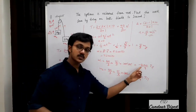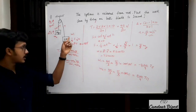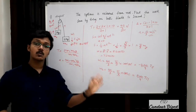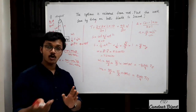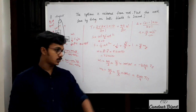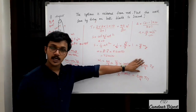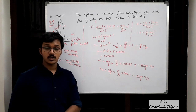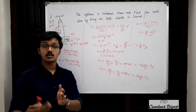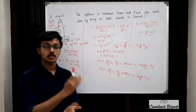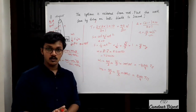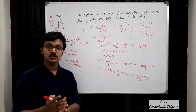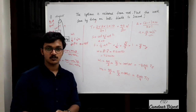Why did we get a negative sign for M1? Because tension and displacement are in opposite directions, so θ = 180° and cos 180° = −1, giving negative work. When we discussed the types of work, we covered the theory related to this as well. I hope the problem is clear — if you have any doubts, please let us know in the comments below.